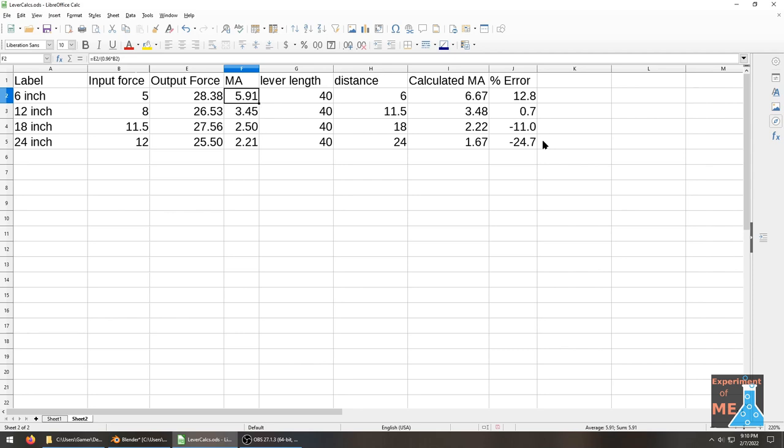Now I had some significant sources of error in this experiment. I believe most of it was the inaccuracy of the little mechanical scale that I had. But still I'm pretty happy with these results. They show that I do get a significant mechanical advantage the closer my stump pulling lever is to the thing that I'm trying to pull up.